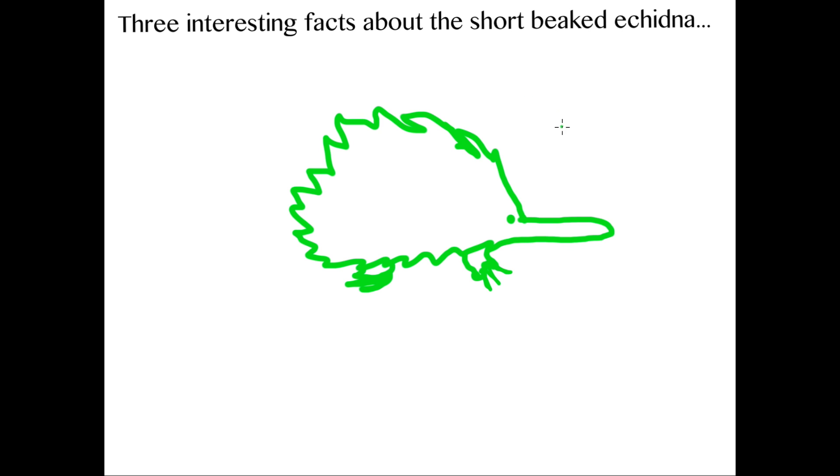It would be remiss of me not to mention that which has gained the echidna infamy in the scientific community. Echidna males and females are indistinguishable externally, but inside, things really get interesting. The male penis is about 25% of body length and is renowned for having four heads. During ejaculation, however, the echidna only fires from two heads on one side.